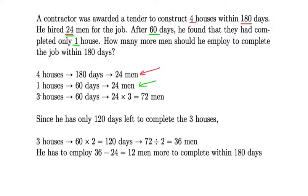So how can he complete the three houses? He needs to hire more men. You have to times three because the more houses, the more men you have to hire. So we multiply it by three. One house is 24 men, so therefore three houses is 72 men. You have to think a little bit about this.